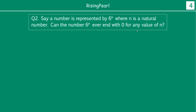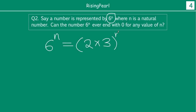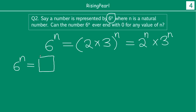We'll take a look at one more similar question. The question is: is 6 to the power n, where n is a natural number, able to ever end with 0? Similarly, 6^n can be written as (2 times 3) to the power n, which means 2 to the power n multiplied by 3 to the power n. So if 6^n were to end with 0, that means this number should be divisible by 5.